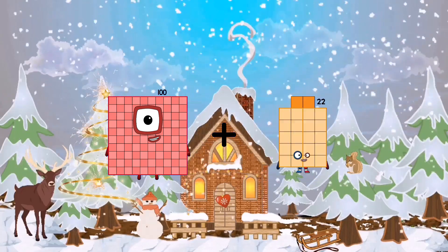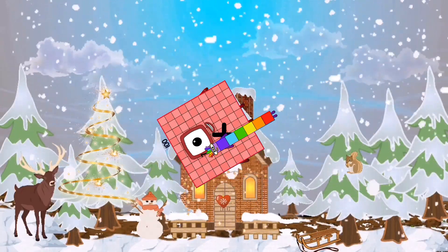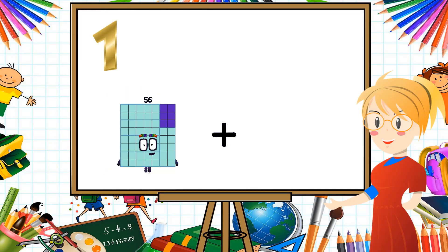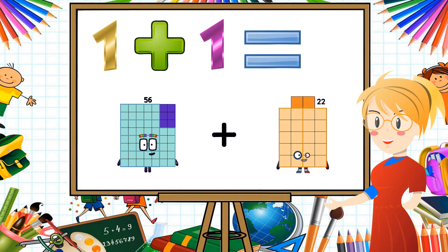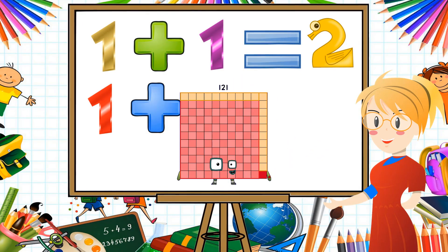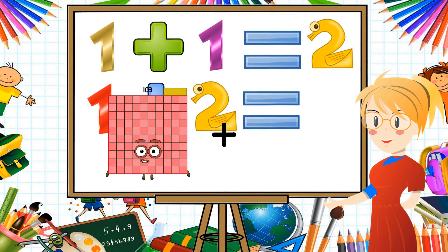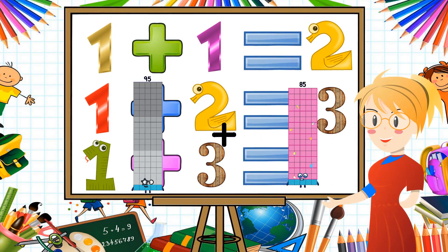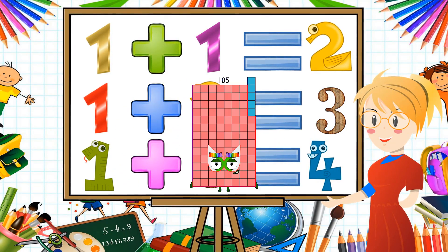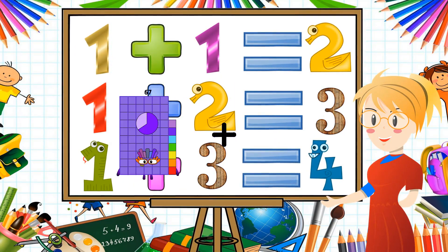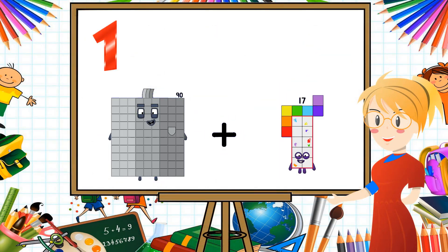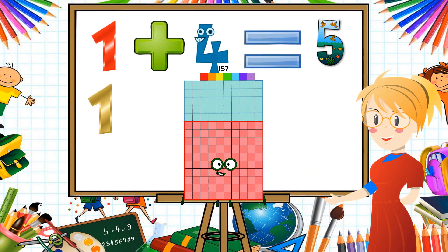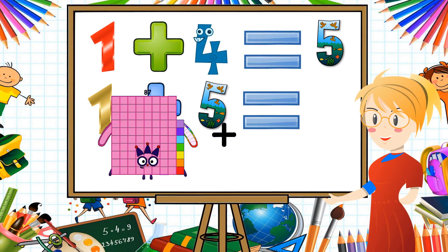Plus 100 plus 7 equals 107. 56 plus 65 equals 121. 121. 95 plus 10 equals 105. 90 plus 67 equals 16.